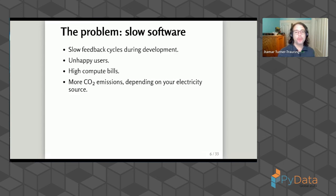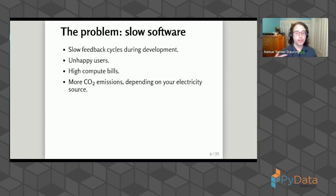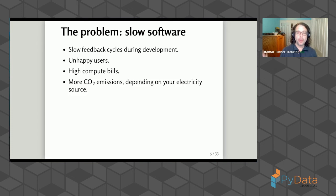The specific problem we're talking about is slow software. Slow software is ubiquitous and it comes with a whole group of different problems. If your software takes a long time to run, development can be very difficult. You want to try a new version of your algorithm, but it takes an hour to see whether or not it's better. So now you can do at most five or six experiments a day, which can really slow down how fast you improve your code.